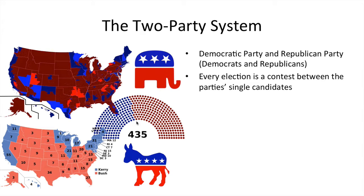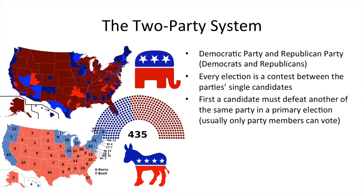But first, a candidate must defeat another of the same party in a primary election. In other words, if you want to run for office on a party ticket, you must first perhaps defeat someone else who wants to do it at the same time for the same party. That's called a primary election, so everything is very contest-based here.